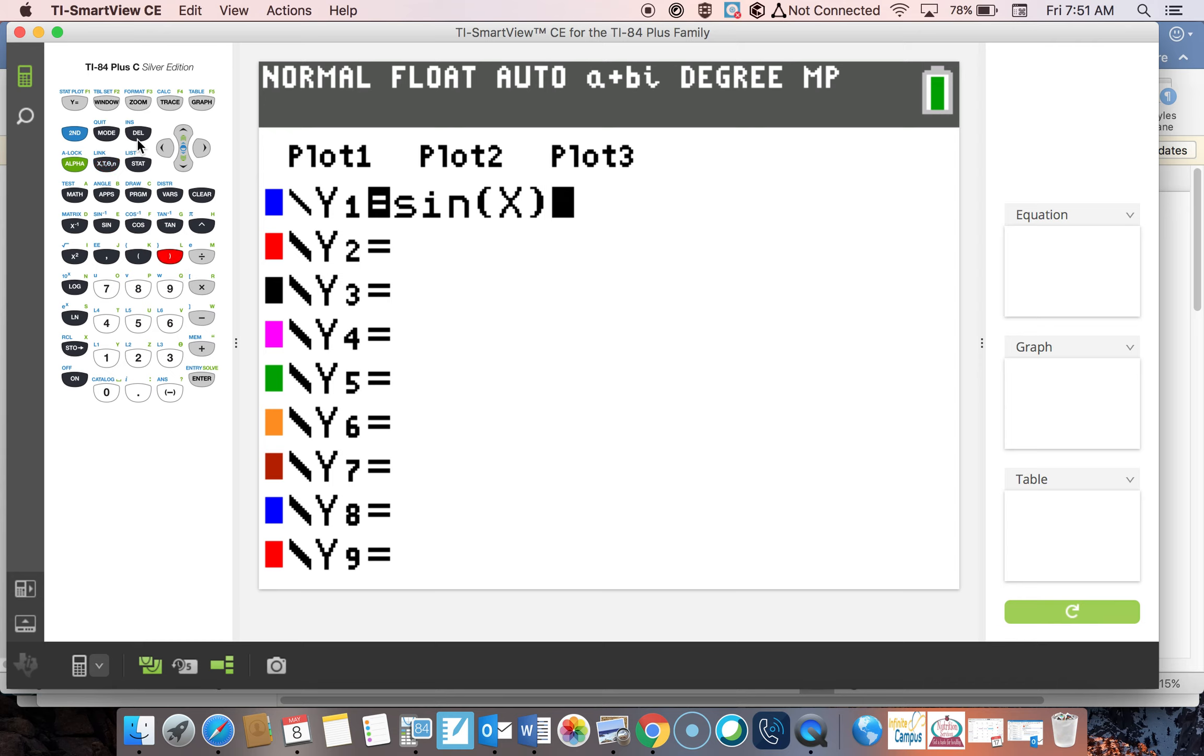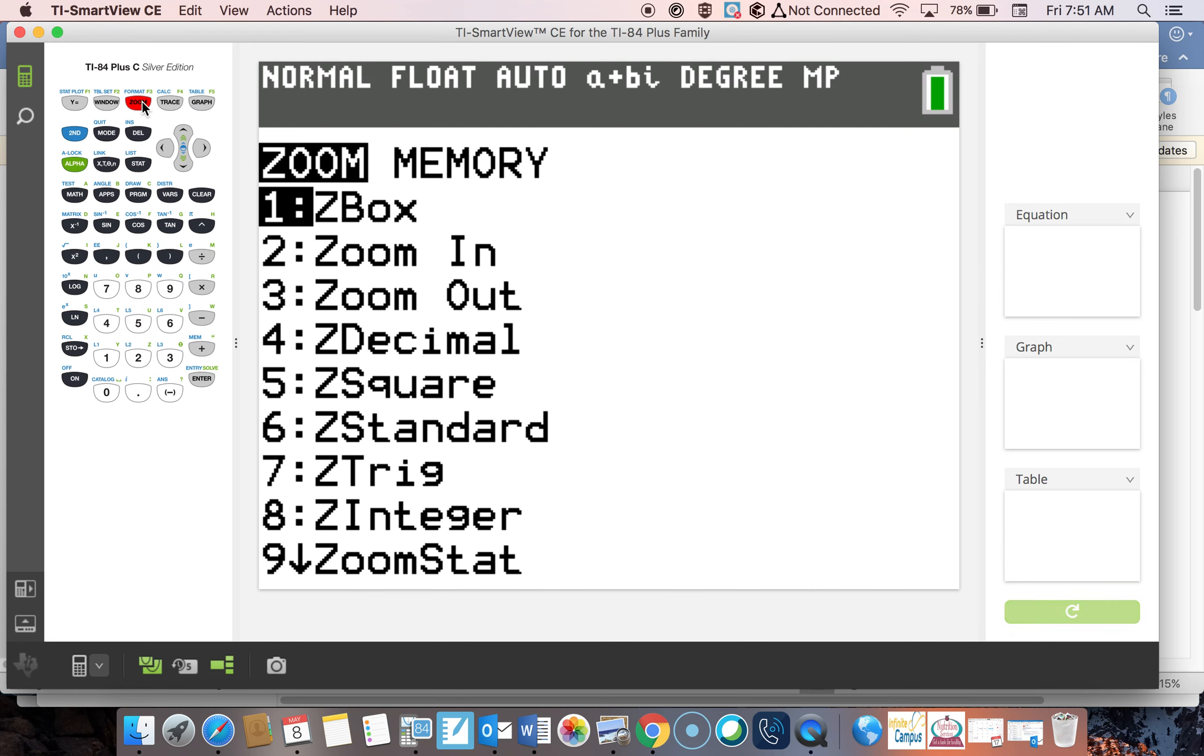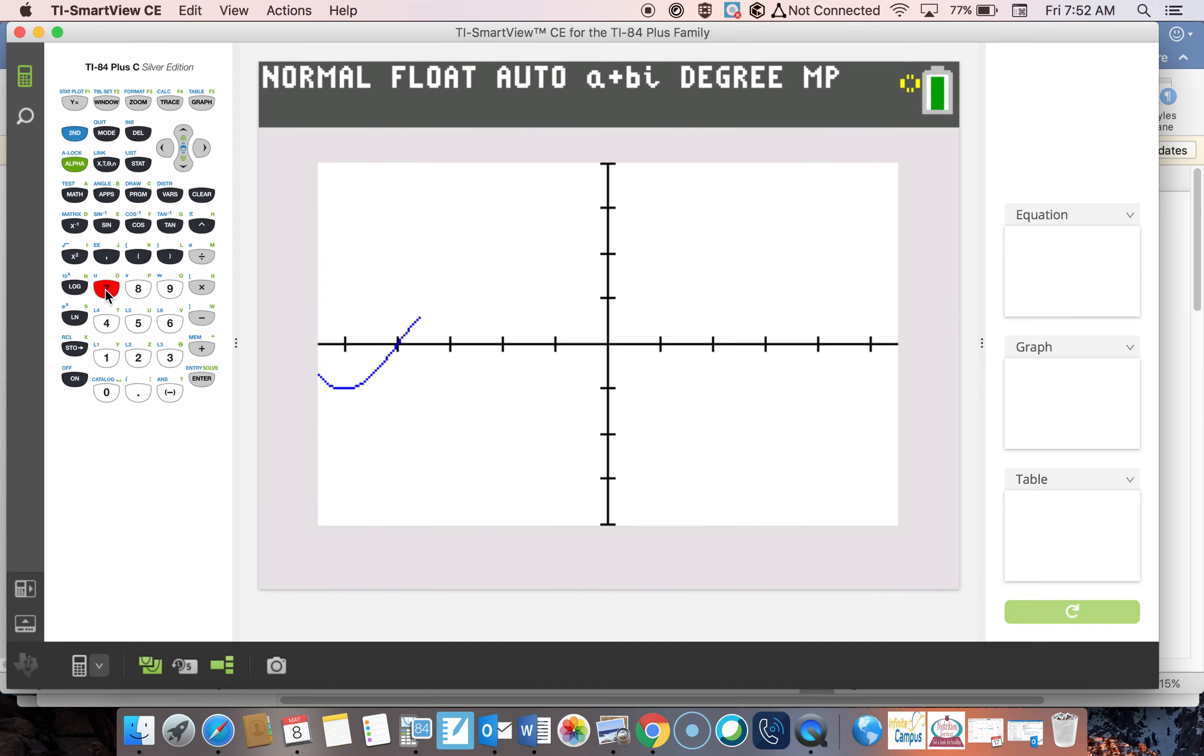And now, what we must do is go to zoom, and we hit zoom. And for the new kids, this was made by a French person. Please hit number seven, zoom trig. And when we see number seven, there is the graph.